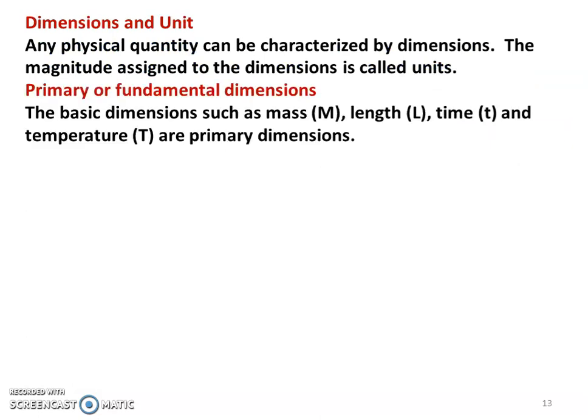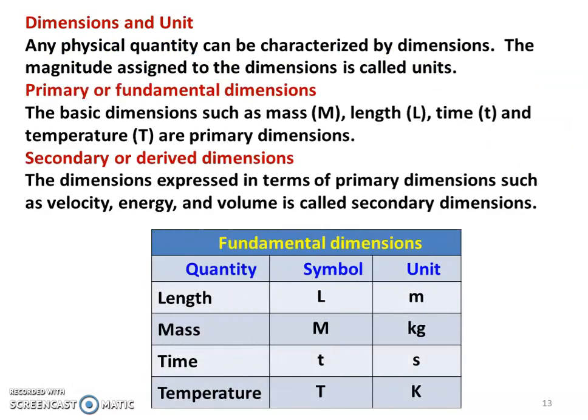Next, we study units and dimensions — a very important topic in this subject. Any physical quantity can be characterized by its dimension, and the magnitude assigned to the dimension is called the unit. There are two types: primary or fundamental dimensions, and secondary or derived dimensions. The primary dimensions are mass (M), length (L), time (t), and temperature (T) — all directly measurable. In SI units: length in meters, mass in kilograms, time in seconds, and temperature in Kelvin.